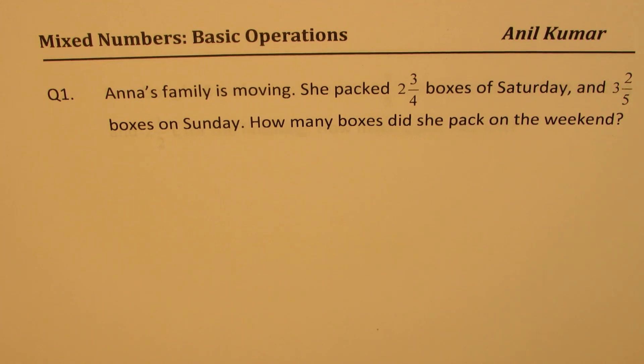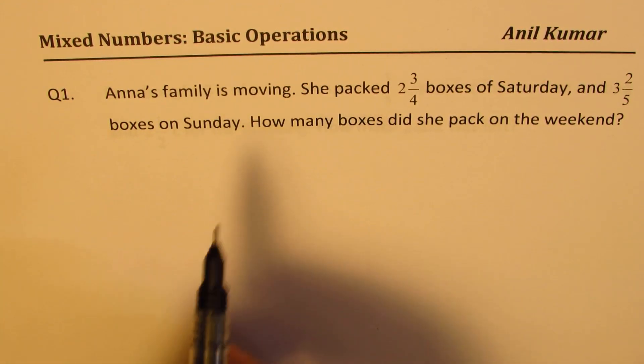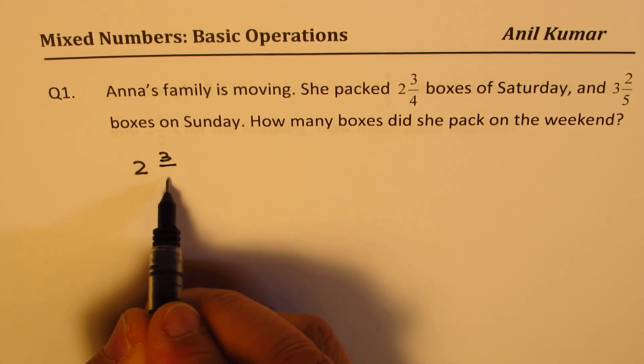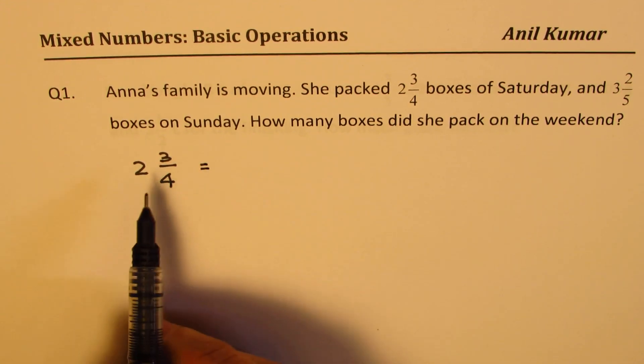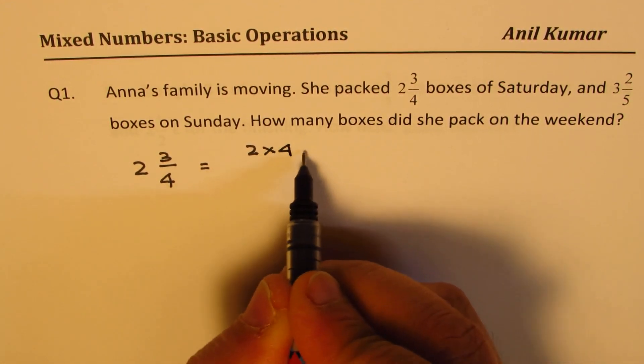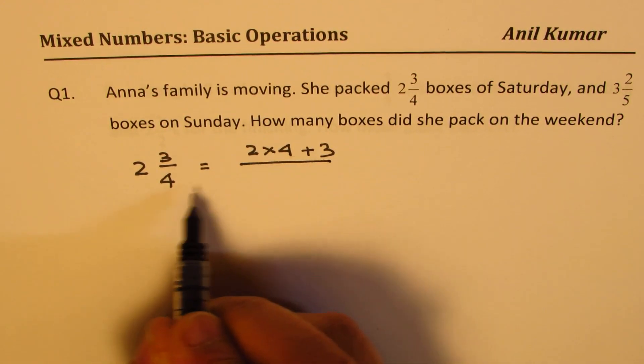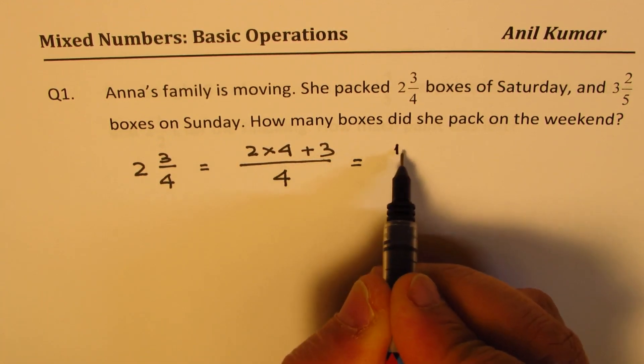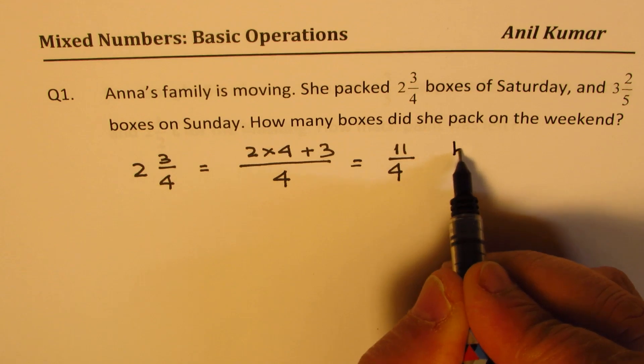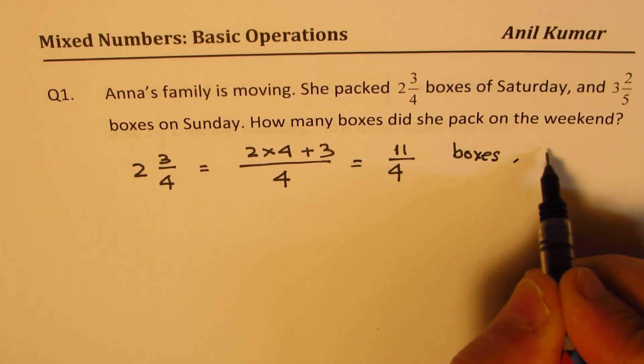So let's begin with the solution of the very first question. Anna's family is moving. She packed 2 3/4 boxes on Saturday and 3 2/5 boxes on Sunday. How many boxes did she pack on the weekend? The strategy to work with mixed numbers is to write them first as improper fractions. So 2 3/4 means we multiply 2×4 and then add 3. That becomes your numerator, the denominator remains as 4. So we get 8 plus 3, 11 over 4. Those are the number of boxes she packed on Saturday.